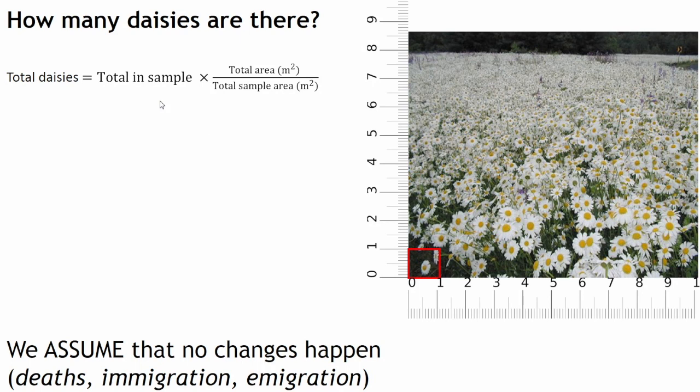So how many daisies are there? We use this equation to calculate how many daisies are in the field. Total daisies equals total in sample times the total area of the whole area we're looking at, divided by the total sample area. Normally I would start over here and work our way around, but total in sample means we have to actually use the quadrats first. There's something simpler we need to do before that, which is to find the total area of the field.